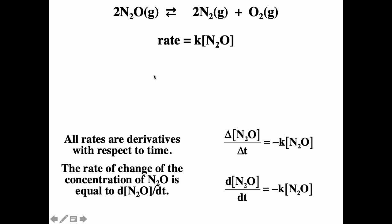Here we have a first order reaction. The exponent has to be determined experimentally — it was determined experimentally that the rate is directly proportional to the concentration of N₂O. We can write the rate as a change in concentration over change in time, and it equals k times the concentration. Because this is the reactant, the concentration is going down, so the rate has to be negative — that's why you have a negative sign there.